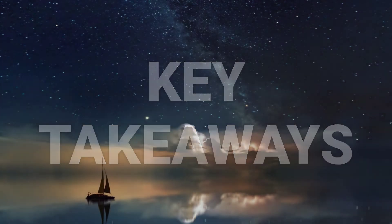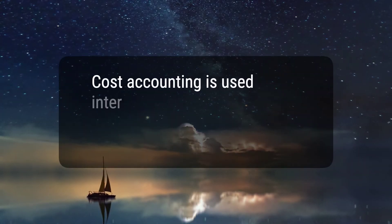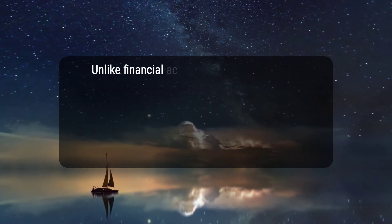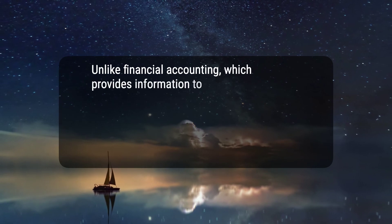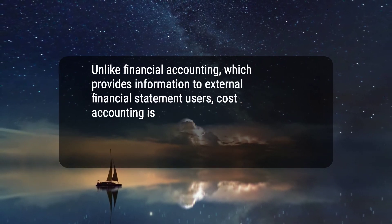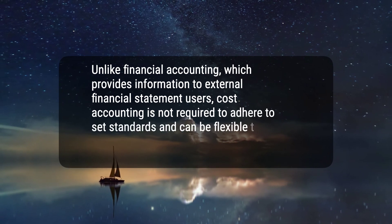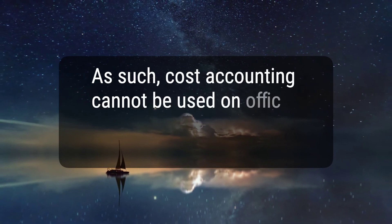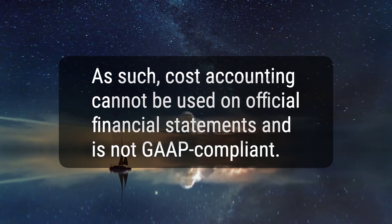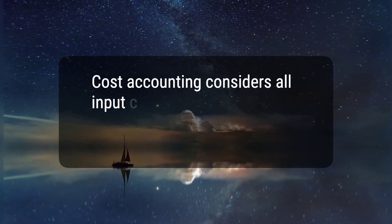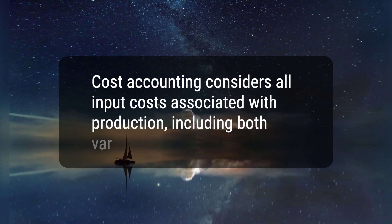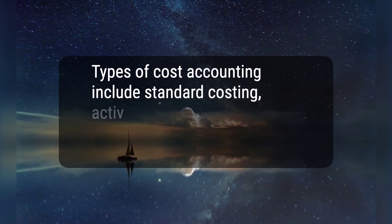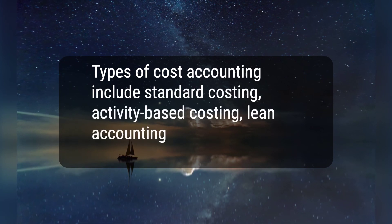Here are five key takeaways. 1. Cost accounting is used internally by management in order to make fully informed business decisions. 2. Unlike financial accounting, which provides information to external financial statement users, cost accounting is not required to adhere to set standards and can be flexible to meet the particular needs of management. 3. As such, cost accounting cannot be used on official financial statements and is not GAAP compliant. 4. Cost accounting considers all input costs associated with production, including both variable and fixed costs. 5. Types of cost accounting include standard costing, activity-based costing, lean accounting, and marginal costing.